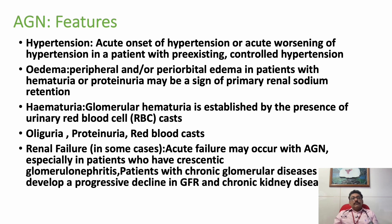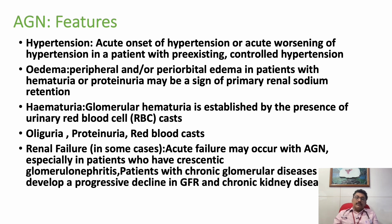Hematuria is very classical — most patients will have RBCs in the urine, and some can have RBC casts. Oliguria develops as urine output slowly decreases due to renal failure. Renal failure patients can present with acute breathlessness, uremia, and elevated creatinine. With adequate treatment, most patients return to normal, though some may develop chronic kidney failure afterwards.